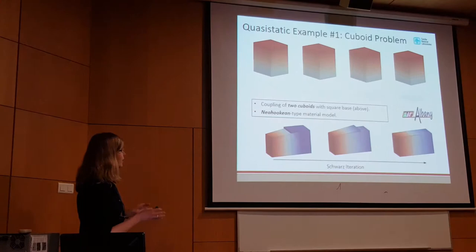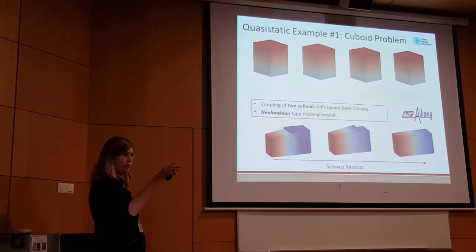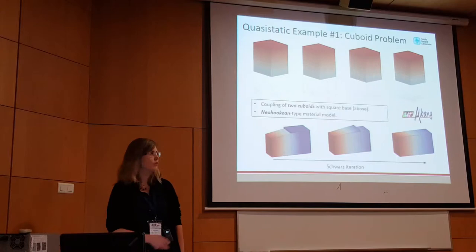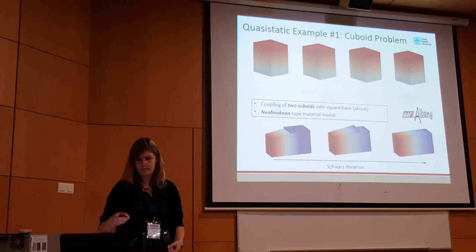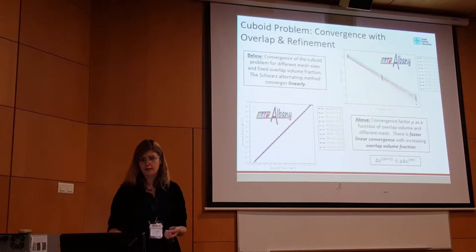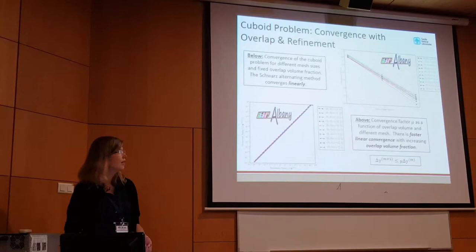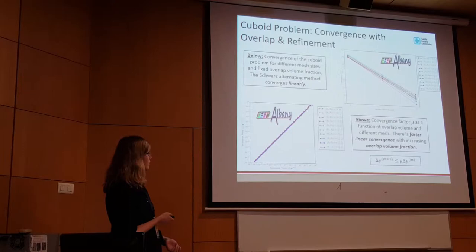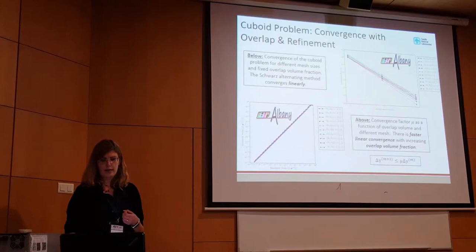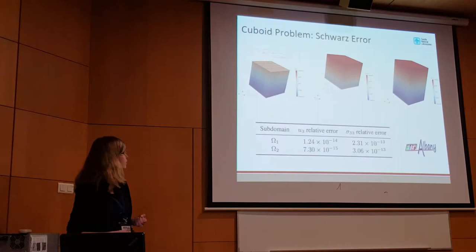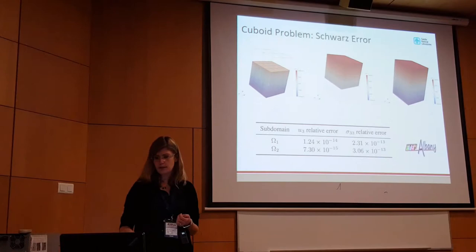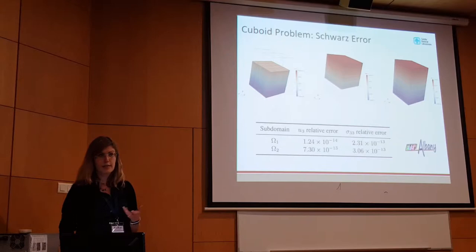I'm going to show three examples, starting with a proof-of-concept verification problem. This is a very simple cuboid problem — two cuboids with a square base, pulled to stretch, with a Neo-Hookean material model prescribed. We're looking at convergence of the method as we change the overlap and refinement. This plot shows linear convergence, consistent with the theory. As you increase the overlap volume fraction, you get faster linear convergence, also consistent with theory. Errors with respect to a reference solution are 10 to the minus 14 for displacement and 10 to the minus 13 for stress — no significant coupling error.